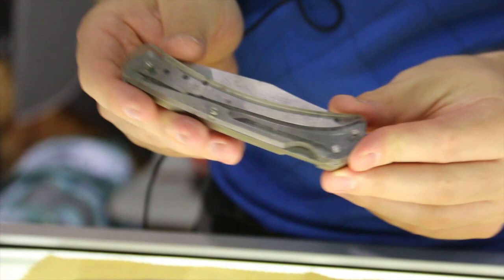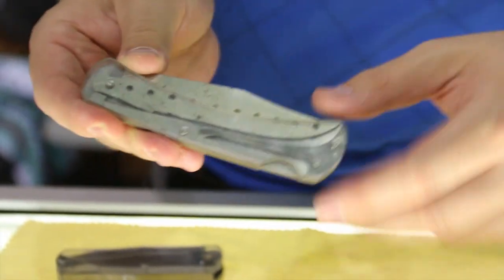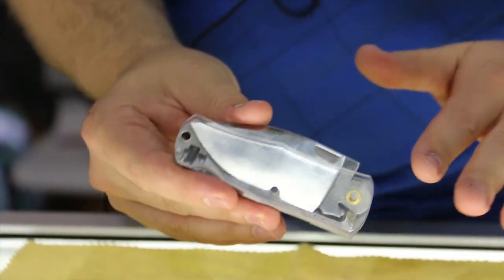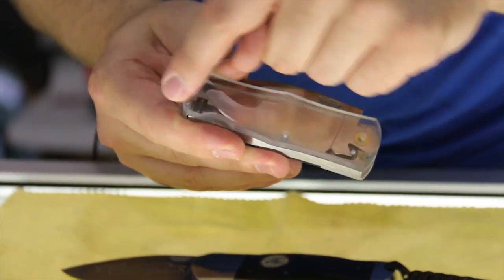We accomplished that in a few different ways. If we look at this knife here, this is an old lock back from the 70s. You're losing a lot of space to the spring bar and the lock bar here. So what we did instead, here's a see-through example.